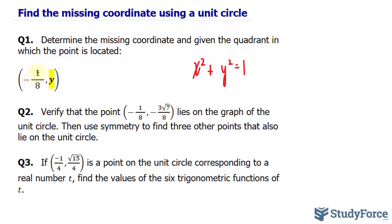So by substituting negative 1 over 8 into x, we can start to solve for y. Let's substitute negative 1 over 8 into here. We have negative 1 over 8 raised to the power of 2 plus y squared is equal to 1. Without evaluating this part, I will solve for y first.